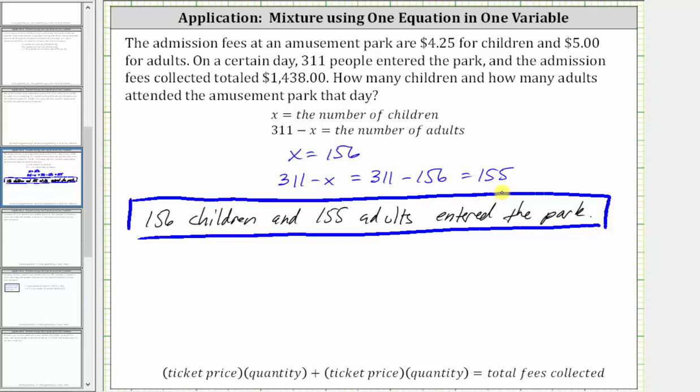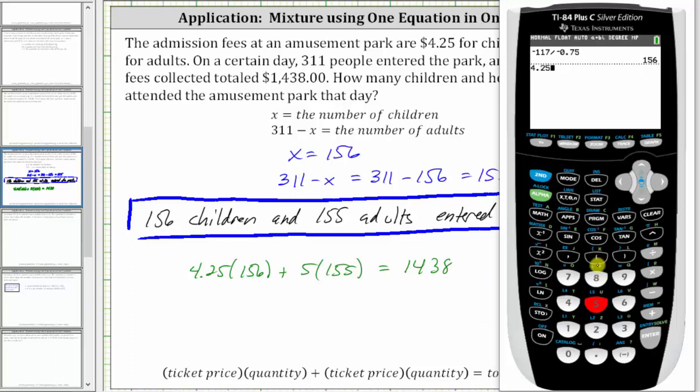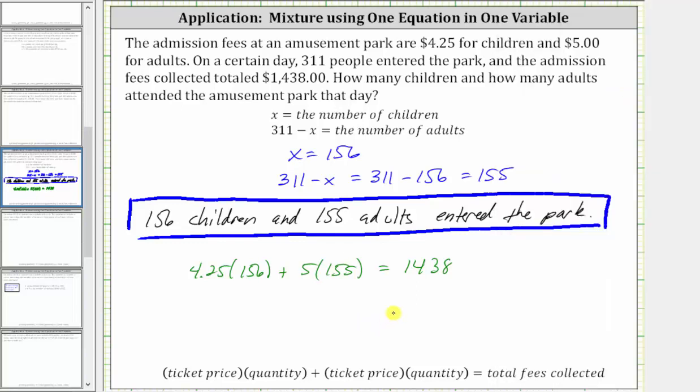Before we go, let's just double check this to verify these answers do satisfy our fee equation, which is $4.25 times the number of children, which gives us 4.25 times 156, plus $5 times number of adults, which would be 5 times 155, must equal the total revenue collected of $1,438. And let's check this on the calculator. 4.25 times 156 plus 5 times 155 does equal the total fees collected of $1,438, which verifies our solution is correct.